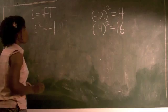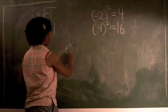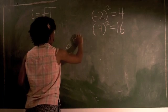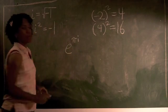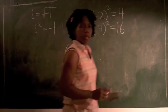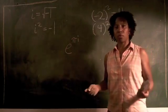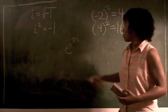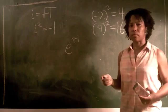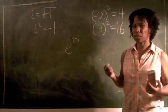So the question still remains, what does it mean to take a number like e to the pi i power? The pi part isn't too bad, because pi is a real number. It's 3.415 approximately. But i isn't real. So what does it do?